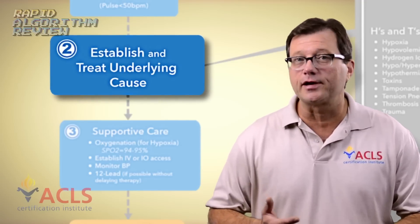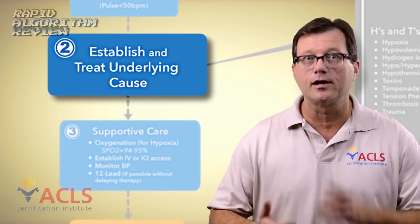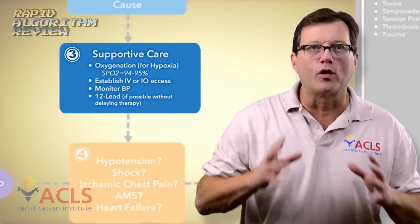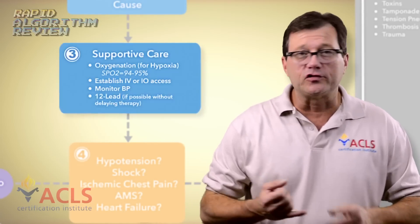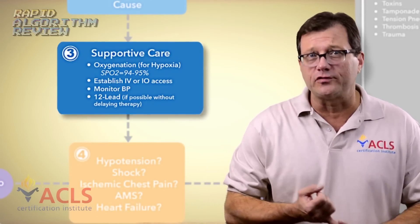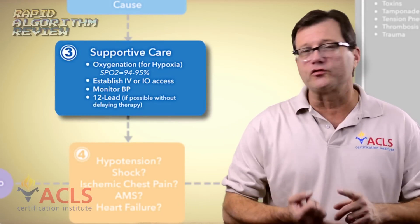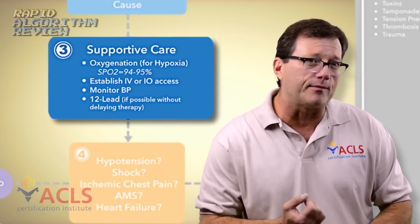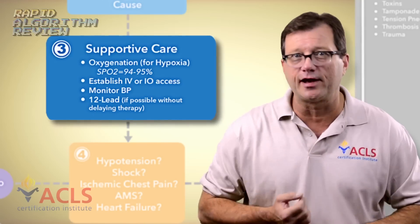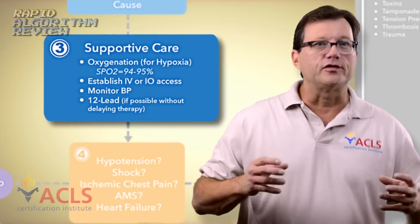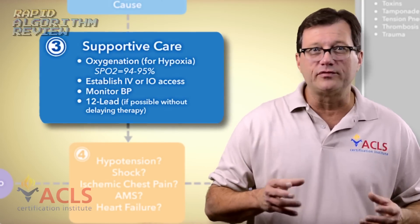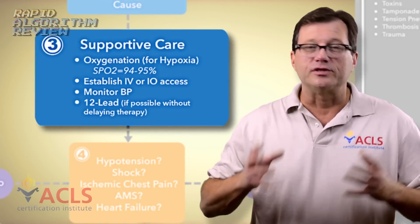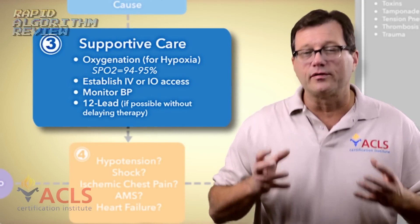Quickly get a history — what medications are taken, pertinent past medical history. Next, supportive care: get your patient on some oxygen. We're trying to achieve an SpO2 of 94–95% — you might see that on a test. Get your IV. Get your 12-lead as long as it doesn't delay care, but start your supportive care.